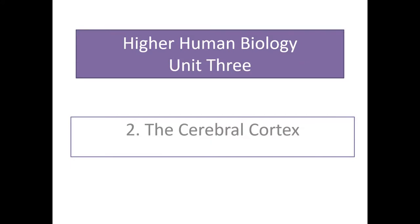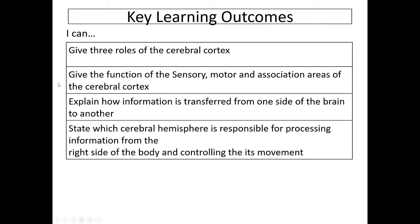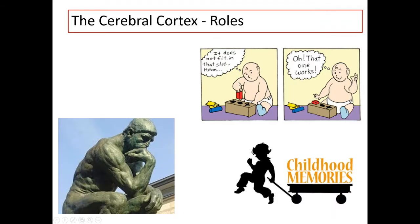This video covers Higher Human Biology Unit 3, specifically area 2, the cerebral cortex. The key learning outcomes are to give the three roles of the cerebral cortex, to give the function of the sensory, motor and association areas, explain how information is transferred from one side of the brain to the other, and to state which cerebral hemisphere is responsible for processing information from the right side of the body and controlling movements.